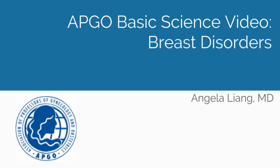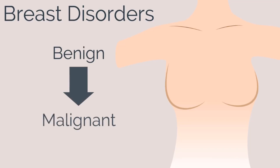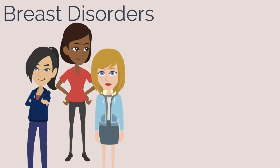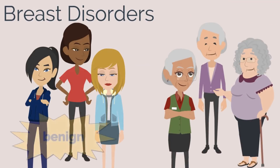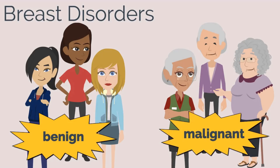APCO Basic Science Video Topic: Breast Disorders. Breast disease encompasses a wide spectrum of disorders that range from benign to malignant disease. The different etiologies of breast disease fluctuate depending on a patient's age, with benign disorders more common in premenopausal women and malignancy more common in older patients.